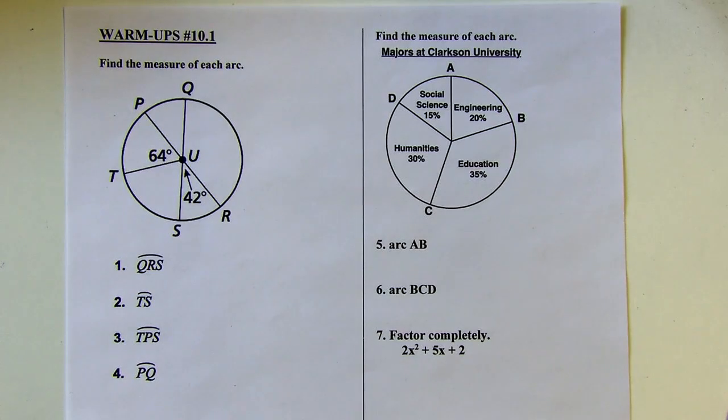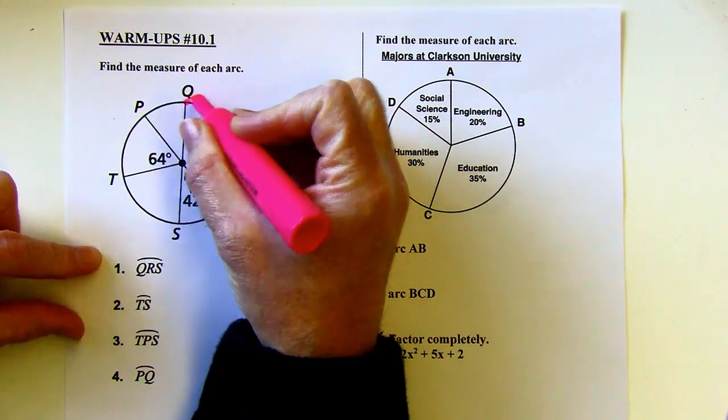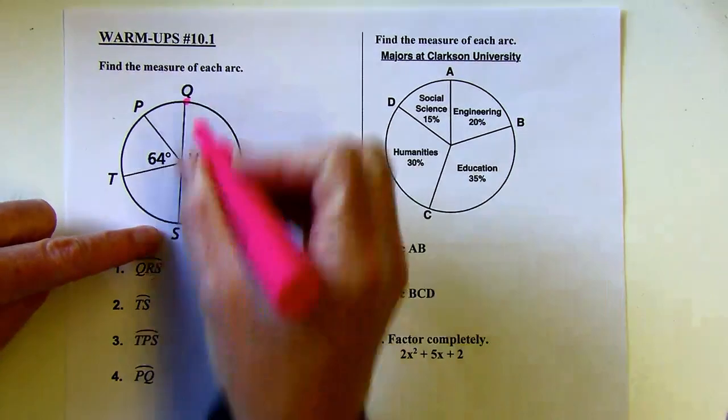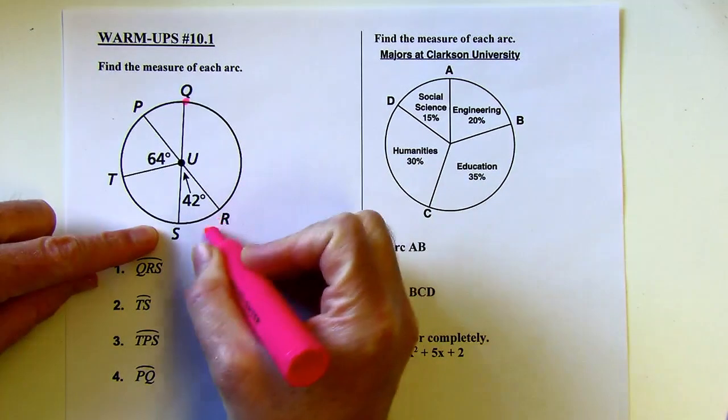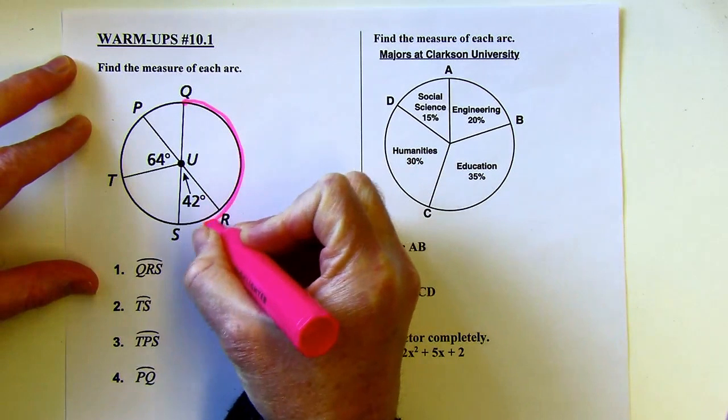Okay, here is warm-up 10.1. We're going to find the measure of each arc. First, I'm going to start with arc QRS. So arc QRS, I'm starting at Q, going to end at S, but I have to go past R on my way to S. So that tells me I'm dealing with this arc.